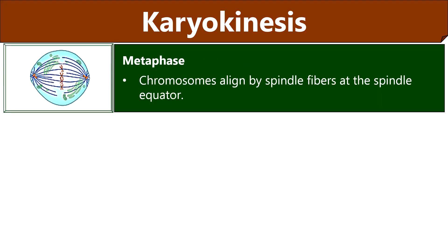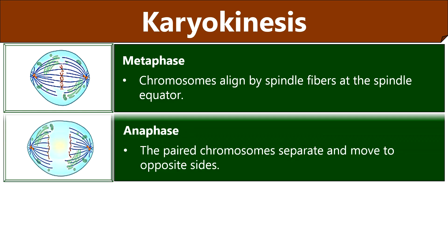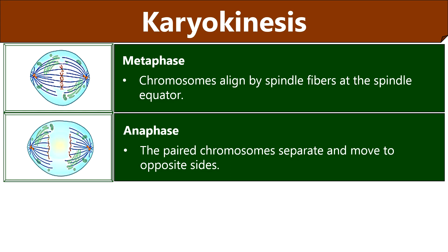Metaphase is the stage when the chromosomes align at the equator by forming the metaphase plate. The chromosomes at the spindle equator are attached through the spindle fibers to both poles. During anaphase, the chromosomes at the metaphase plate split and move to the opposite ends. These sister chromatids are now referred to as daughter chromosomes, and the centromere of each daughter chromosome is directed towards the pole.